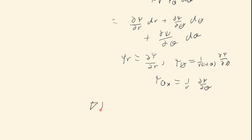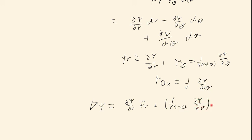In summary, we found that the grad of psi in spherical coordinates is equal to d psi by dr times e_r, plus 1 over r sin theta times d psi / d phi times e_phi, plus 1 over r times d psi / d theta times e_theta.